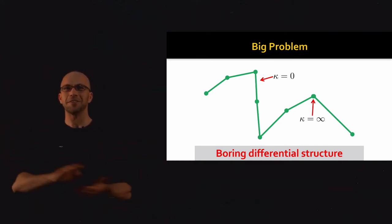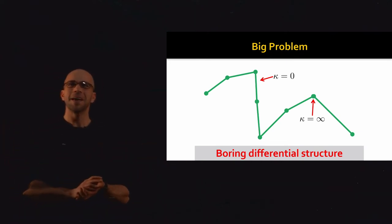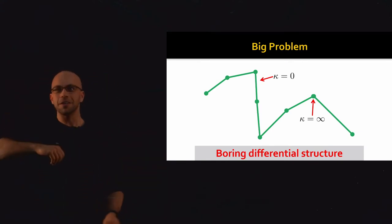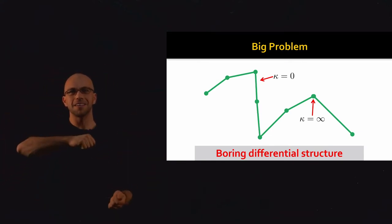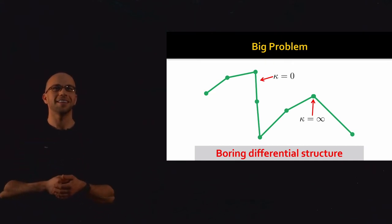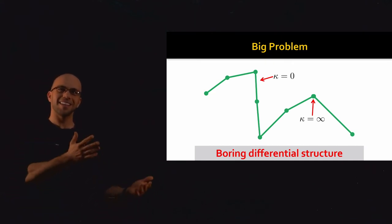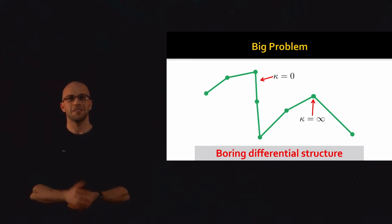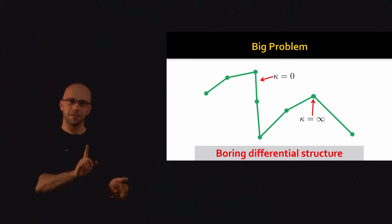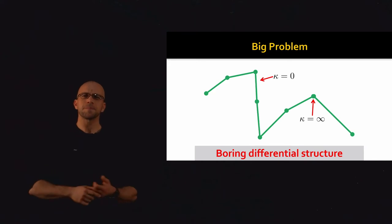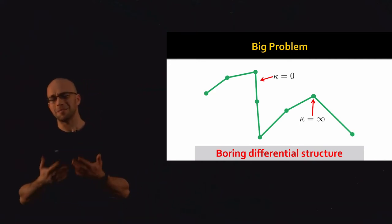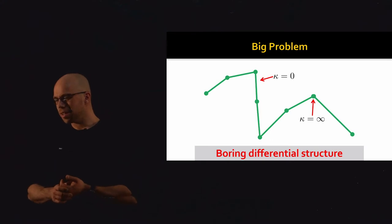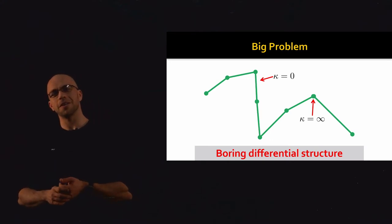At every vertex, the curve turns some delta amount, so the curvature is infinity. So is that it? Is the curvature of a polyline just 0, 0, 0, ..., infinity, 0, 0, 0? That's not a particularly useful takeaway for computation. So we're going to try and dig further.